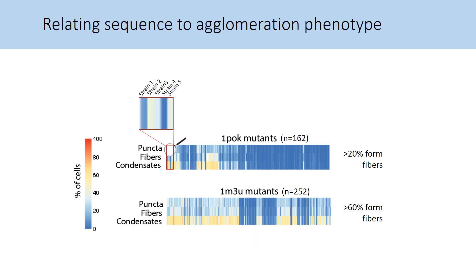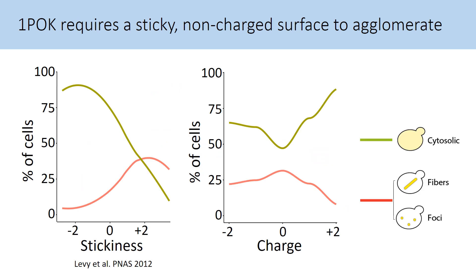With this tool, we can now quantify agglomeration frequency in both libraries, revealing that in the case of 1-POC, around 20% of the mutants formed fibers. Strikingly, in 1-M3U, more than 60% of random mutants form fibers. This observation motivated us to dissect the mutation data to see if we could explain this large number. We focused on two physicochemical properties encoded in the sequence: stickiness and charge.